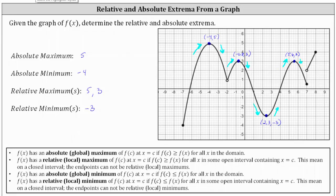We have one more point to consider. Notice we have a closed point here which is a low point, where the ordered pair is 7 comma 0.5. Even though the function does have a jump discontinuity at x equals 7, there is an open interval containing x equals 7, and this point is a low point. Therefore, the y value or function value of 0.5 is a relative minimum. At this location, the function changes from decreasing to increasing. I hope you found this helpful.